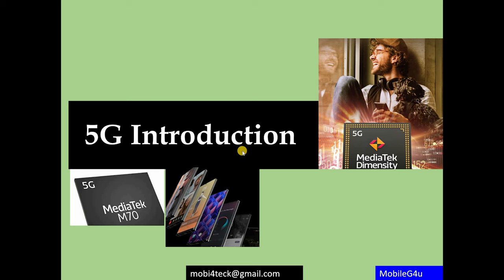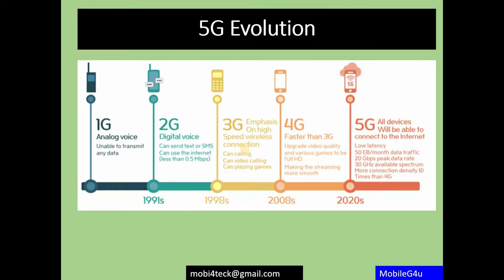Hello friends, welcome to this video. Today we'll have an introduction to 5G — what things are important in 5G, how 5G came about, its evolution, and the magic triangle of 5G. Looking at the evolution, we have 1G, 2G, 3G, 4G, and 5G — the fifth generation. Around 1980 we had 1G, then 2G in 1991, 3G around 1998-2000, 4G's first commercial deployment around 2010, and now in 2020-21 we are seeing 5G.